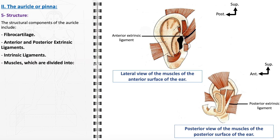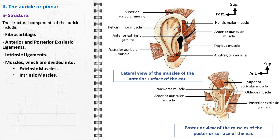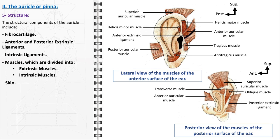The muscles of the auricle are divided into two categories: extrinsic and intrinsic. The extrinsic muscles connect the auricle to the skull and are primarily responsible for larger movements of the ear, such as elevation and retraction. The intrinsic muscles, on the other hand, are found within the ear itself and are responsible for finer, more subtle movements and adjustments of the auricle's shape. The skin covering the auricle plays a vital role — it is thin and closely adheres to the underlying cartilage with minimal subcutaneous tissue, allowing the detailed contours and ridges of the auricle to be visible, which is essential for its sound-directing functions.